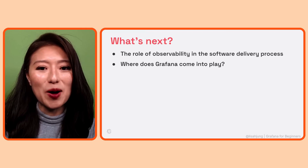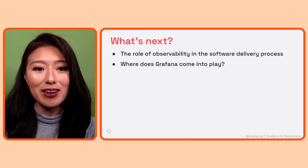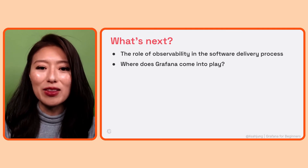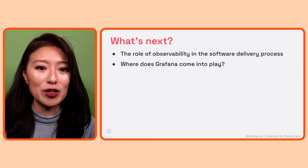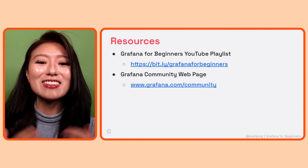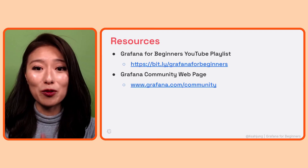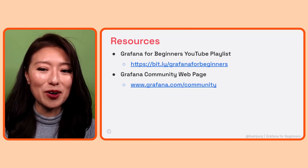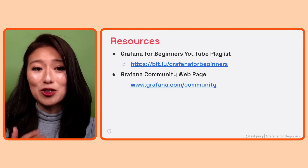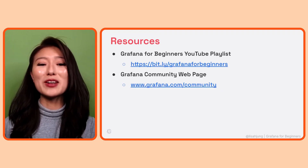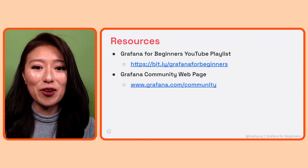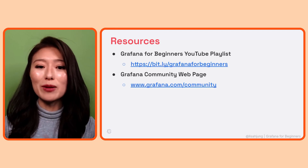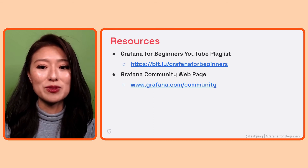In the next episode, we'll talk about the role of observability in the software delivery process, and where in this process Grafana products could be used to observe your system. This episode is a part of the Grafana for Beginners series. To access more episodes, check out this playlist on our Grafana YouTube channel. To access more Grafana-related resources and to become a part of our community, check out our Grafana community webpage where you can also access the forum to ask questions. Thank you for watching, and I'll see you in the next episode.